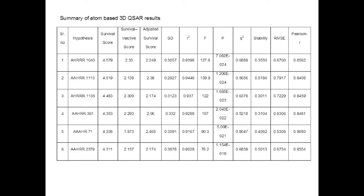The table shows the results of the atom-based 3D QSAR model. A statistically significant 3D QSAR model was obtained using the pharmacophore hypothesis AAAHR-71, having a good correlation coefficient R-squared of 0.9167 and a high Fischer ratio F of 90.3 for the training set of 47 compounds. The predictive power of the generated model was found to be significant, confirmed by the high cross-validated correlation coefficient Q-squared of 0.8047 and Pearson R of 0.9080 for the test set of 16 compounds.